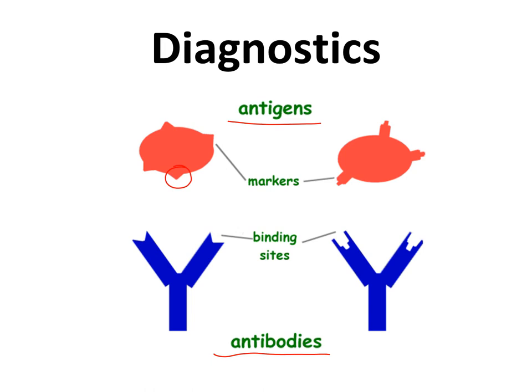So identifying that antigen as compared to this one, because that would indicate two different strains of the microbe. And if you are looking to determine if an individual is immune to a particular strain of a microbe, you would want to test their antibodies to see if they are antibodies to that particular antigen, or the person is producing antibodies to another type of antigen.